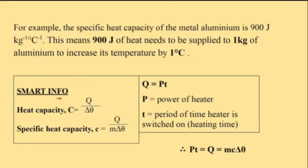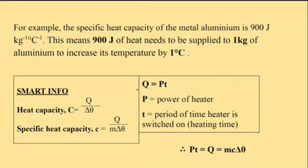Smart info. The formula for heat capacity is C equals Q over delta theta. And the formula for specific heat capacity is c equals Q over m delta theta. Also, Q equals Pt, where P is power of the heat source and t is the period of time of heating, so Pt equals Q equals mc delta theta.